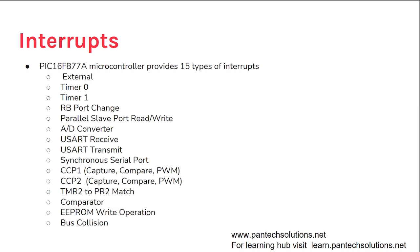Interrupts: it supports 15 types of interrupt sources, including external interrupts, Timer 0 interrupts, Timer 1 interrupts, RB port change, parallel slave port read/write, ADC completion, USART receive/transmit, synchronous serial port (SSP) events, CCP1, CCP2, TMR2, comparator, EEPROM write completion, and bus collision. This microcontroller provides 15 interrupt sources in total.